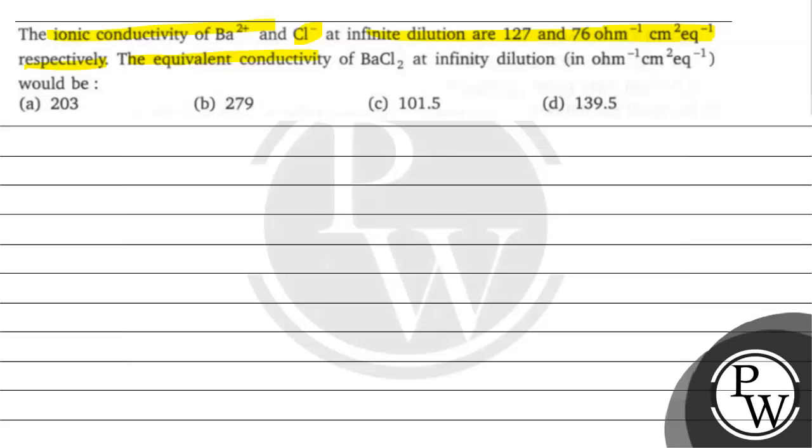The equivalent conductivity of BaCl2 at infinite dilution in ohm inverse centimeter square equivalent inverse would be: option A 203, option B 279, option C 101.5, option D 139.5.